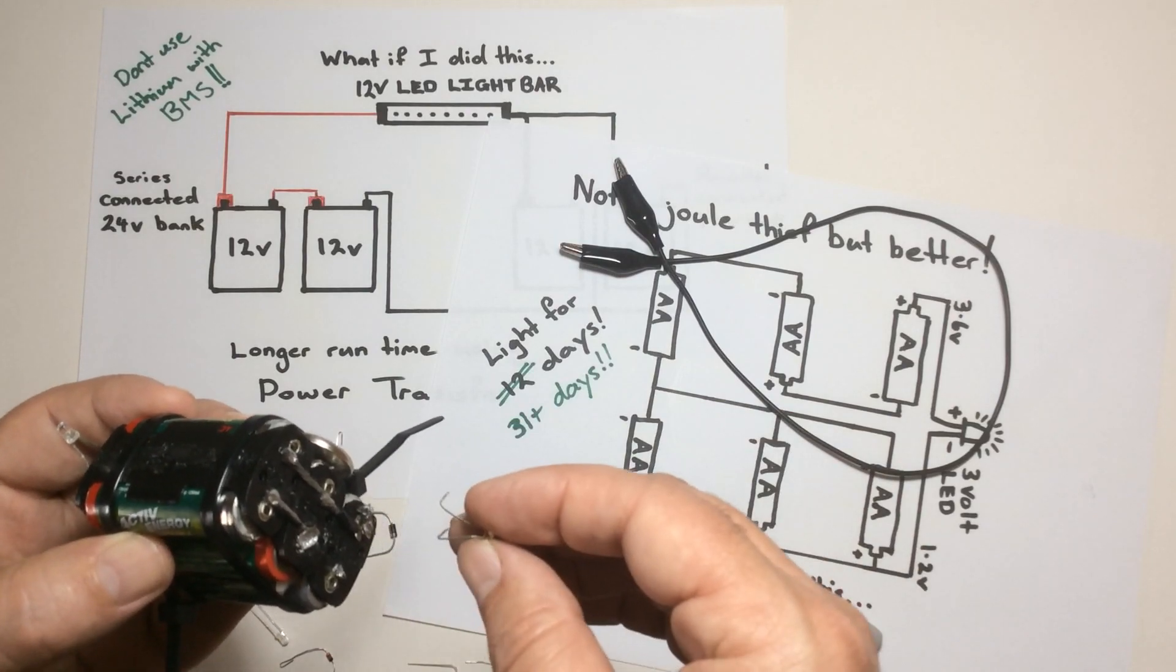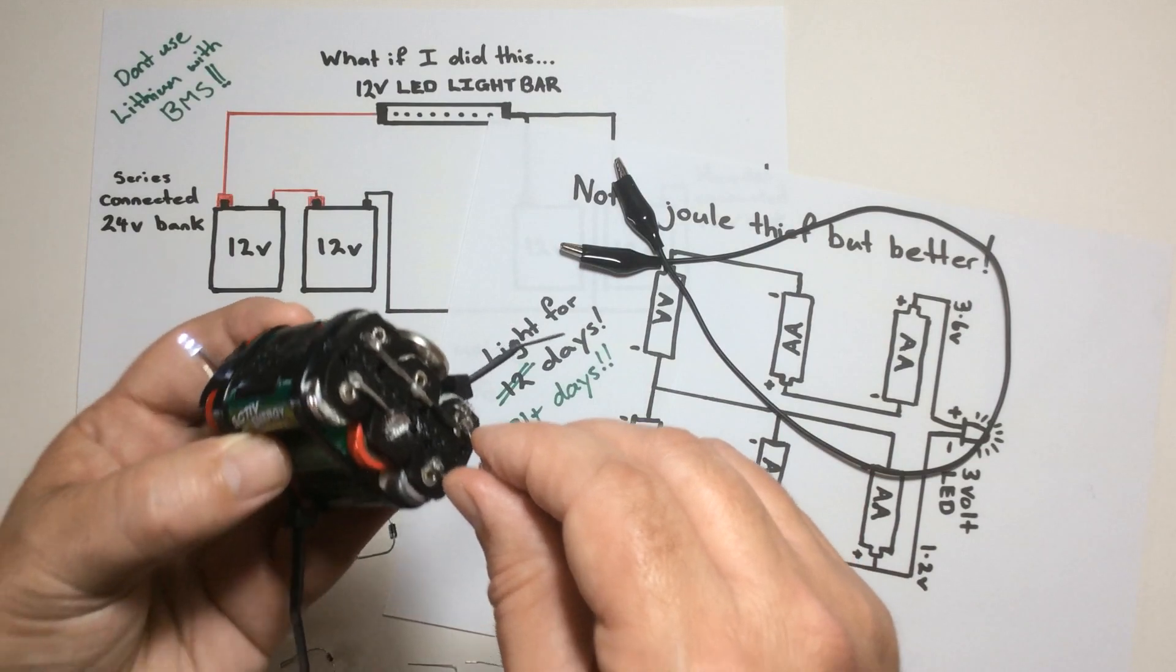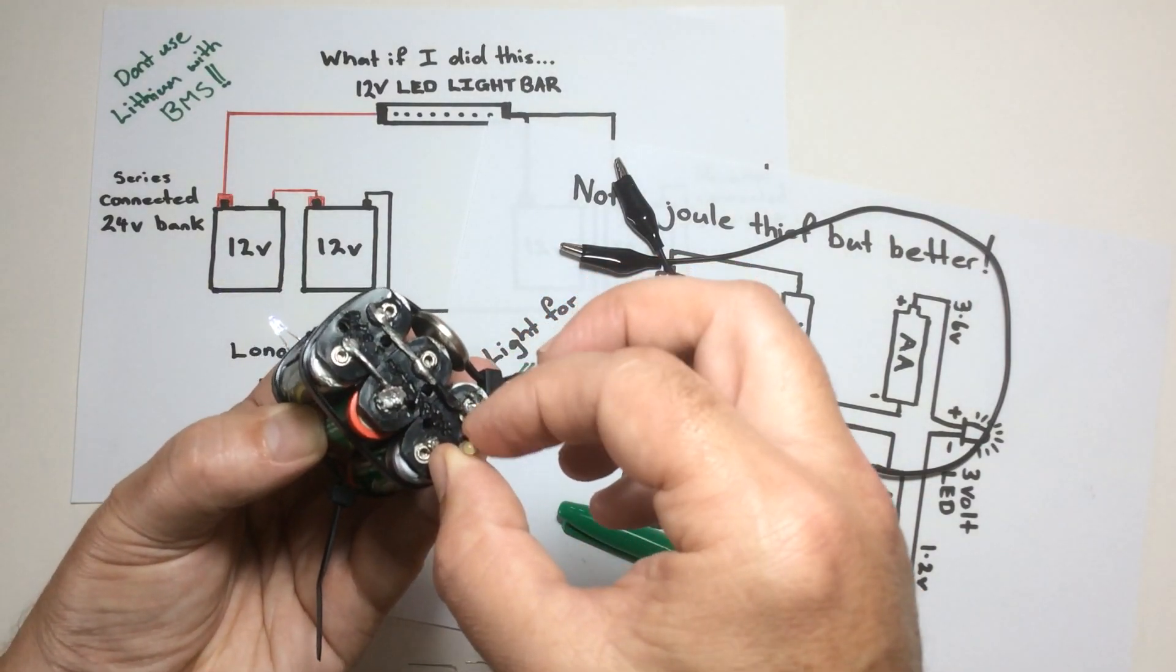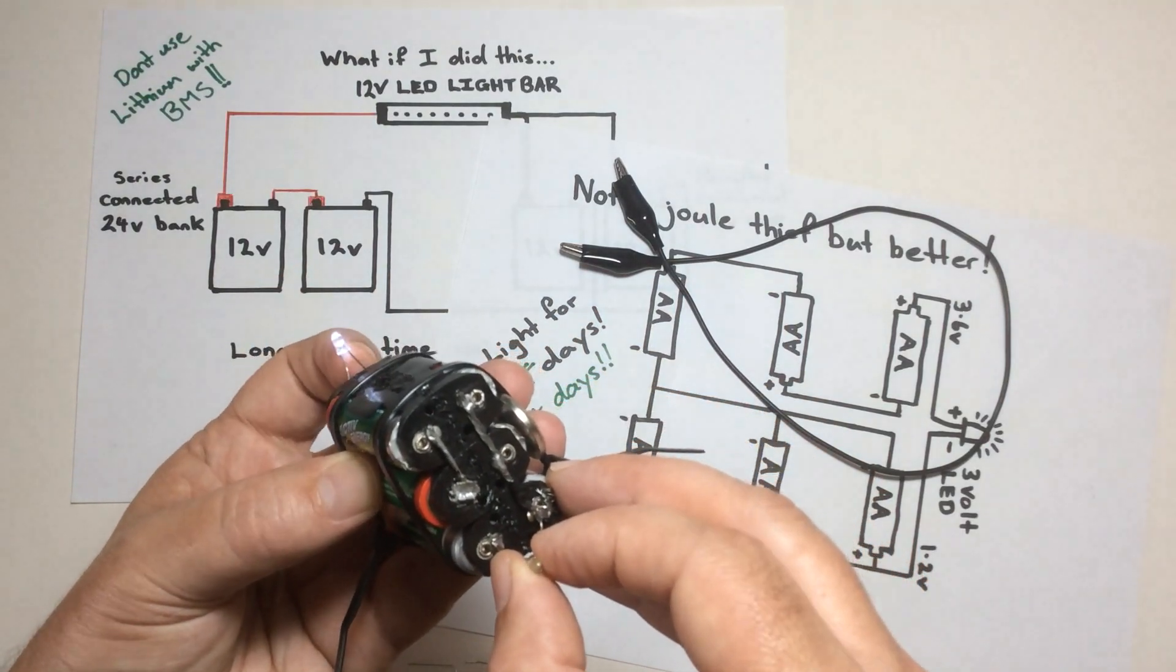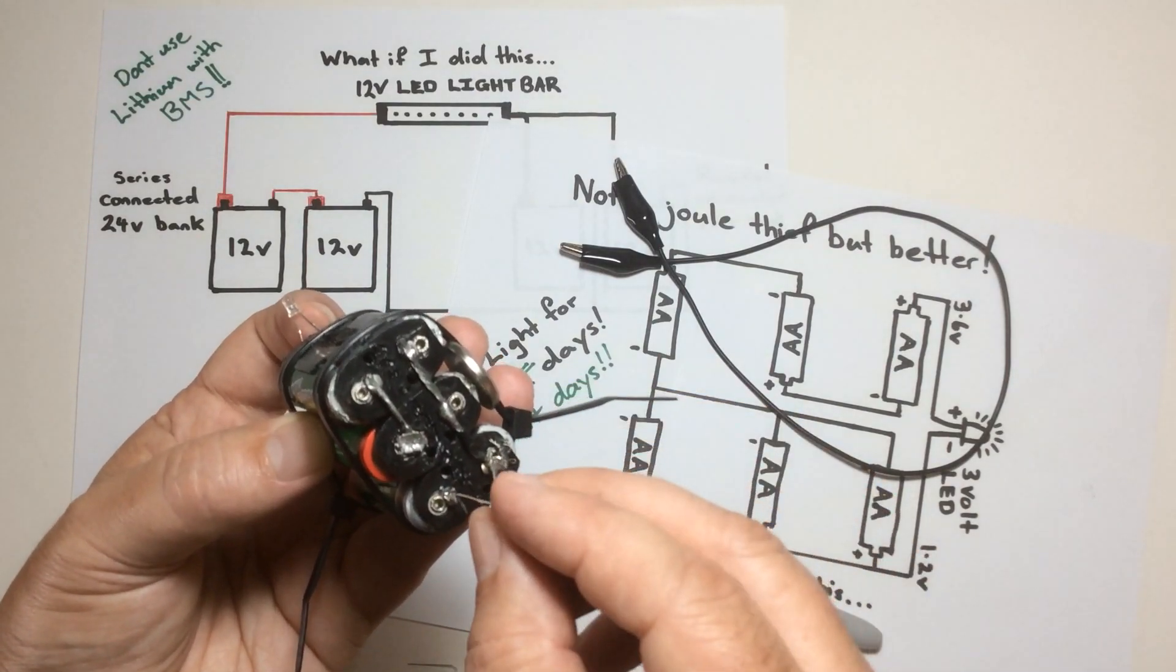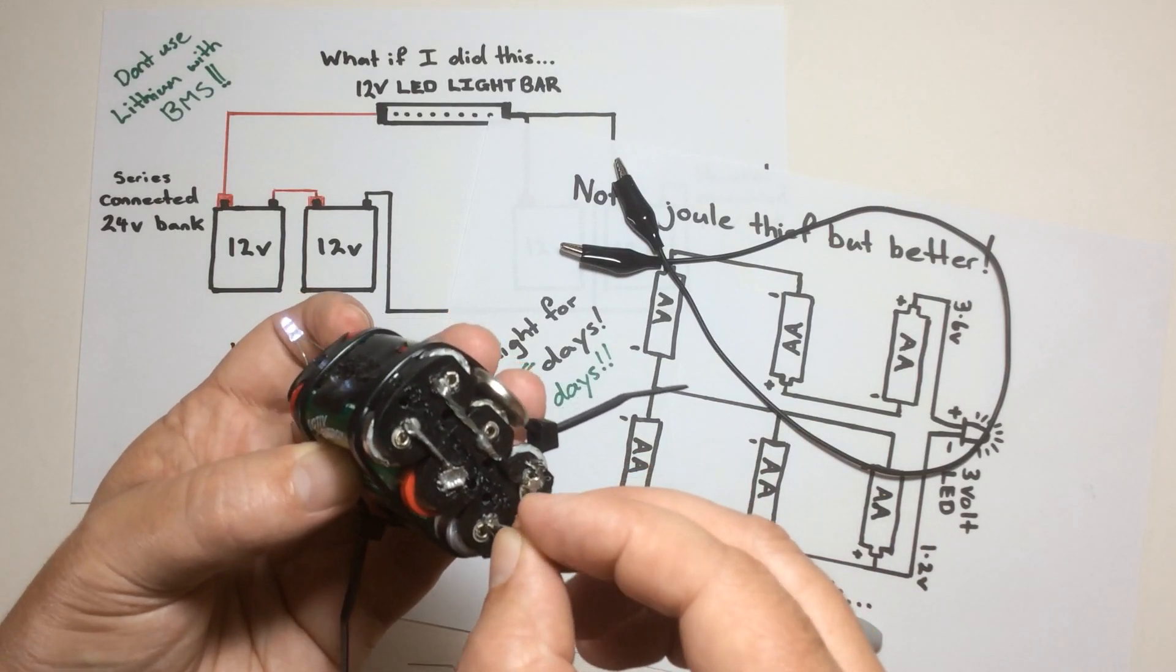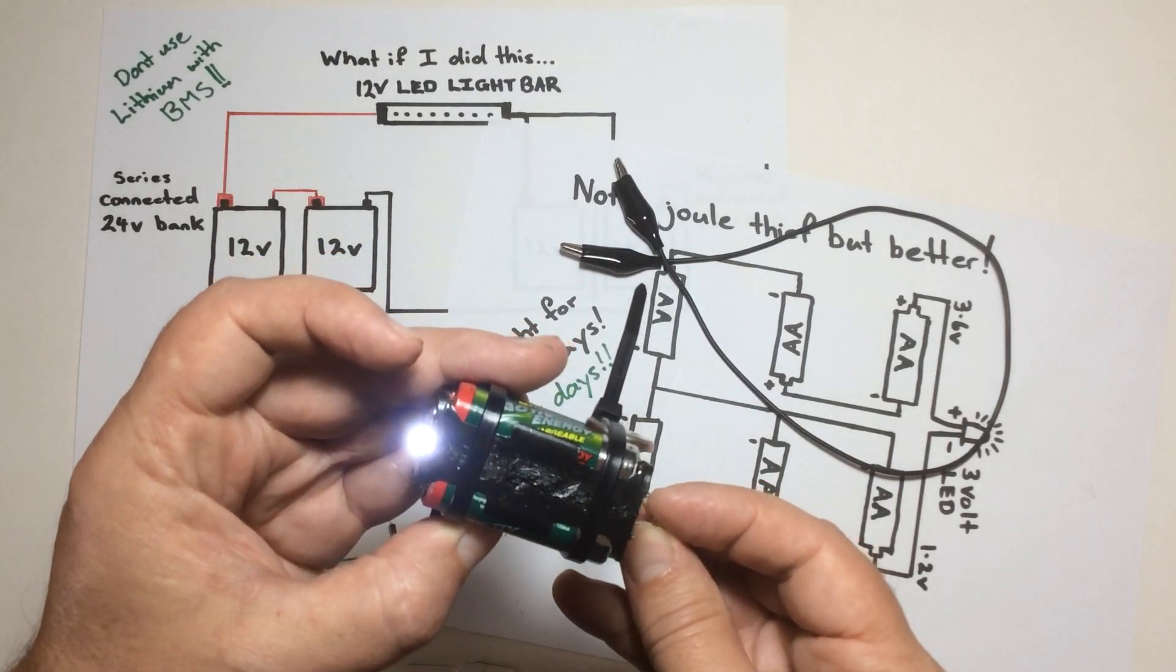Then I thought, well, what happens if I, you know, the light was this way initially and this was the main light that I was running and this section was bridged where this light is now. So I thought, well, what happens if I turn this LED around which is a diode and should stop the electricity going in one direction but the light still turns on nice and bright.